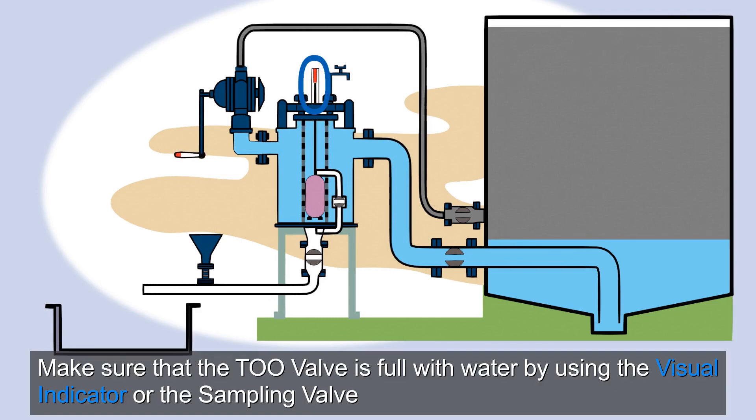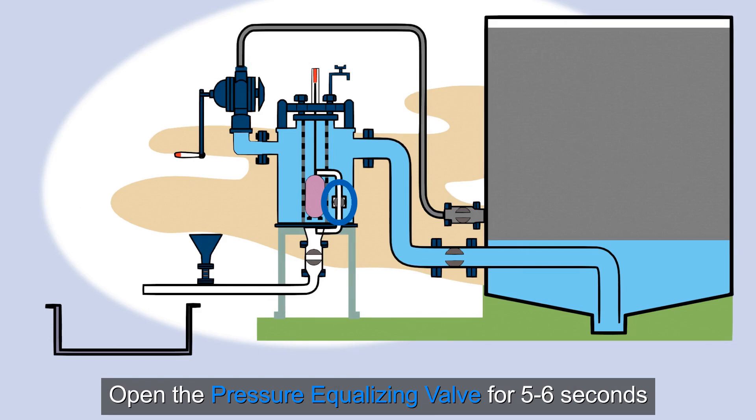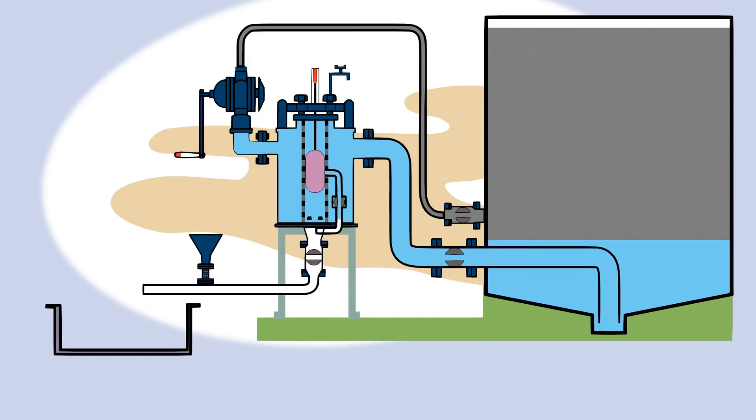Make sure that the TOO valve is full with water by using the visual indicator or the sampling valve. Make sure that the drain valve is in the closed position. Open the pressure equalizing valve for 5 to 6 seconds. Open the drain valve.